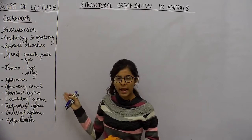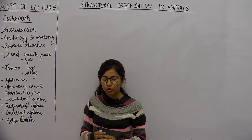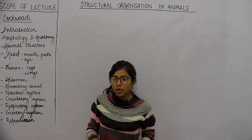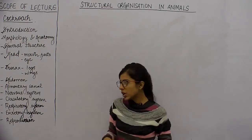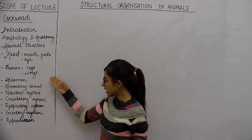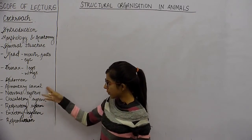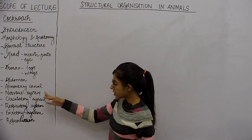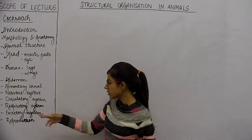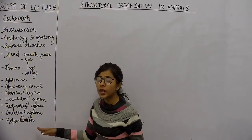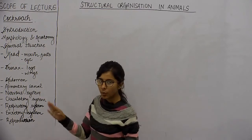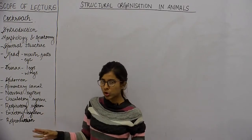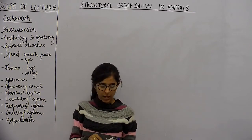Now we will study about the anatomy of the cockroach. Anatomy is the internal structure. So internal structure ke under iske yeh sare systems aate hain: elementary canal (digestive system), nervous system, circulatory system, respiratory system, excretory system, reproductive system and how it reproduces. This all comes in the anatomy of the cockroach. So we will start with the elementary canal.